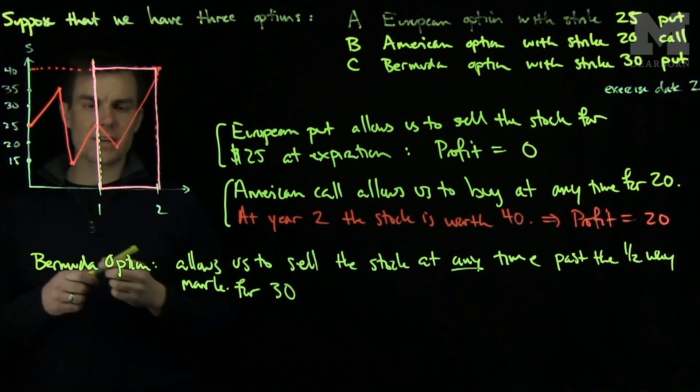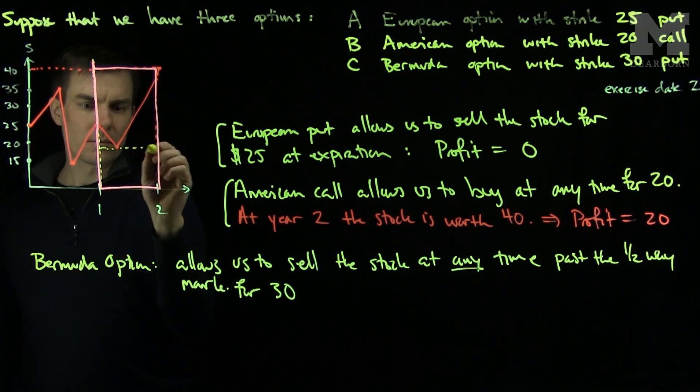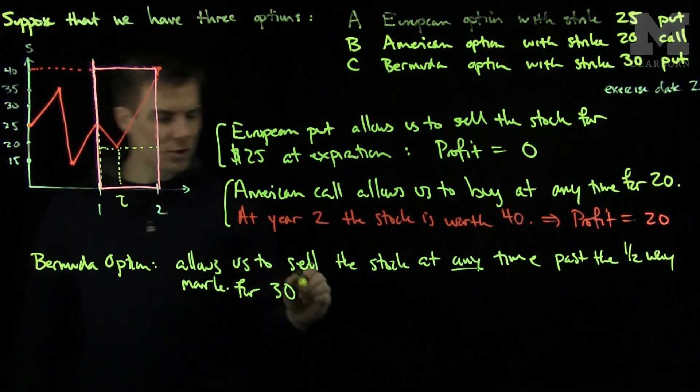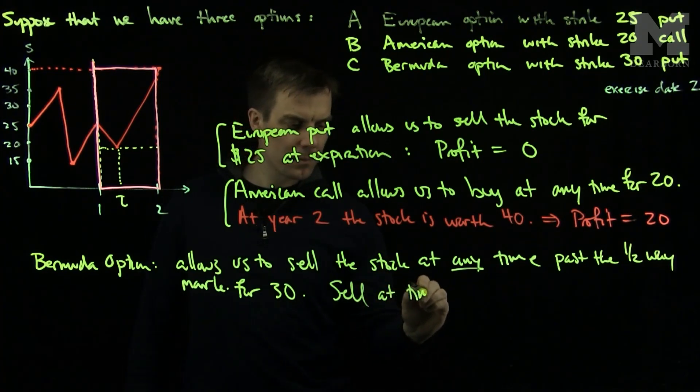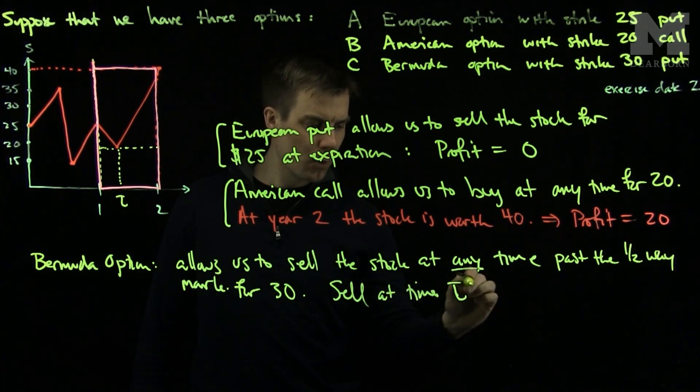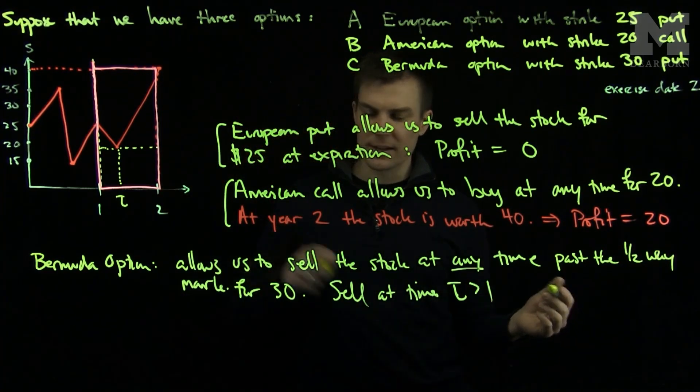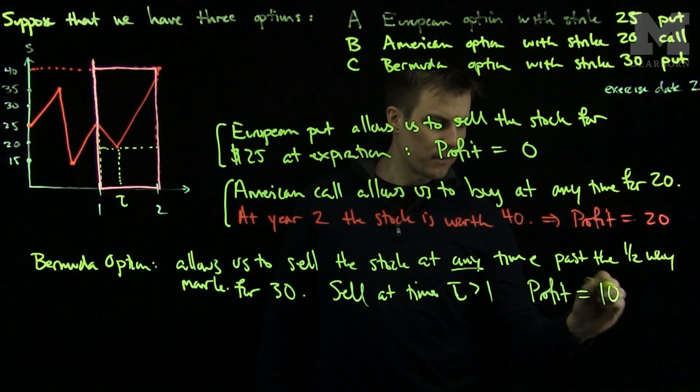I want to find the minimum value of the stock in this range. It looks like the minimum value of the stock at this time, let's call it time tau, which is bigger than one. The stock is worth 20 and I can sell it for 30, so we will get a profit of 10.